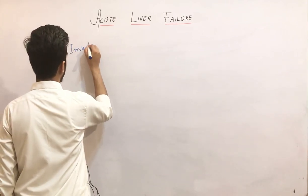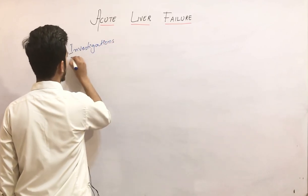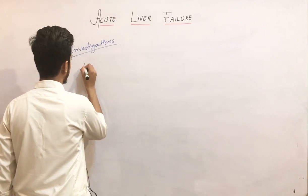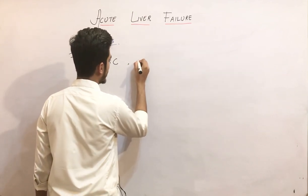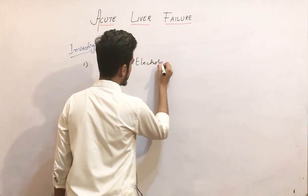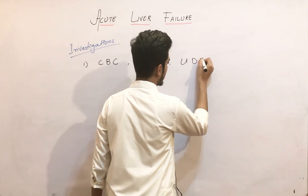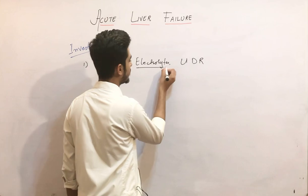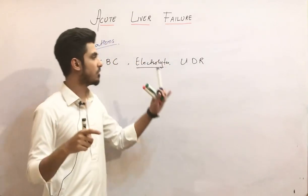What are the investigations we are going to carry out in acute liver failure? The first, very basic investigation is the CBC. You will also do the electrolytes and the urine detail report.